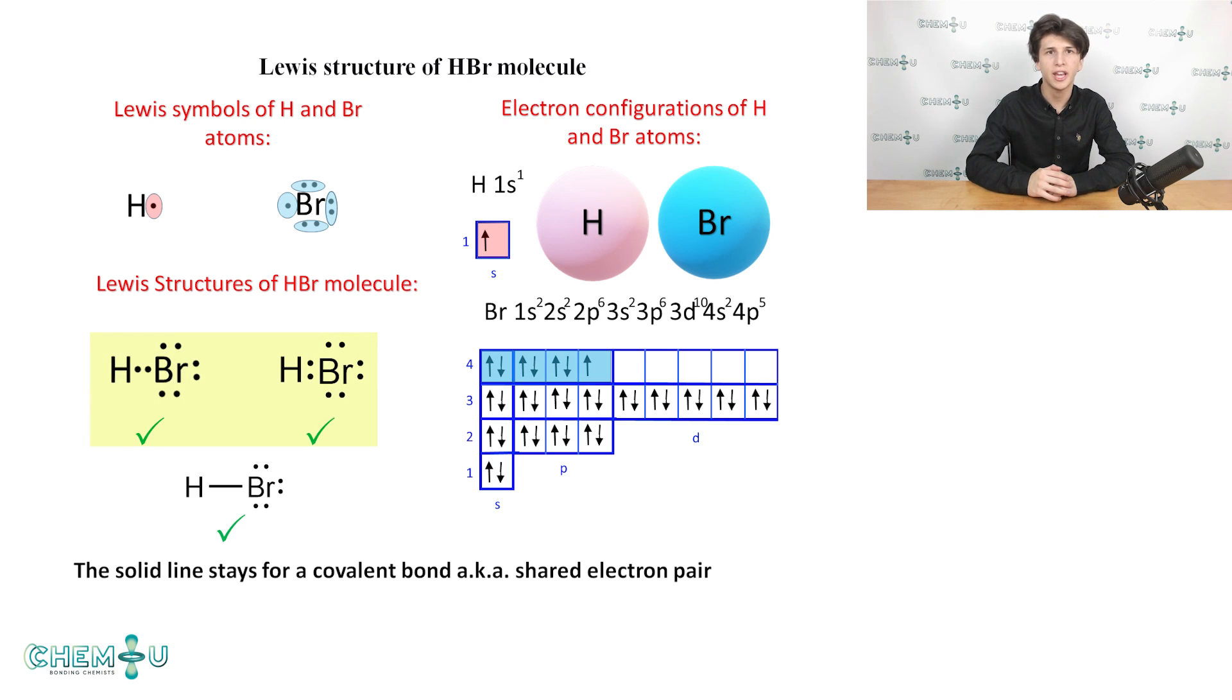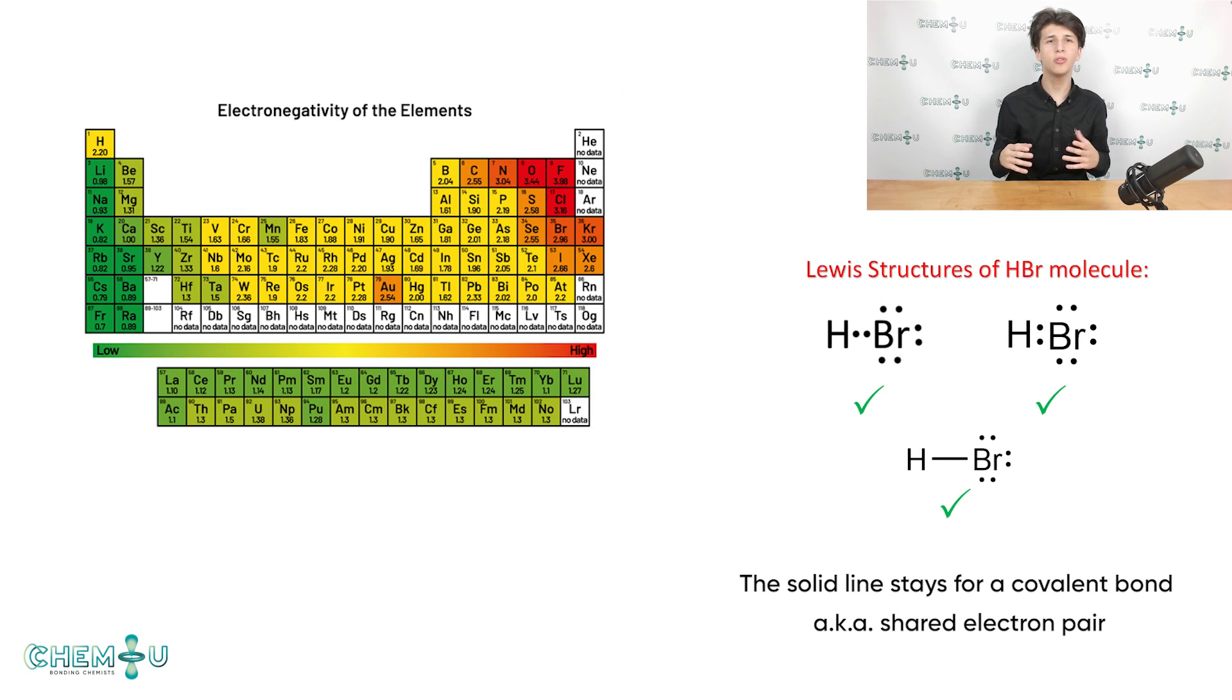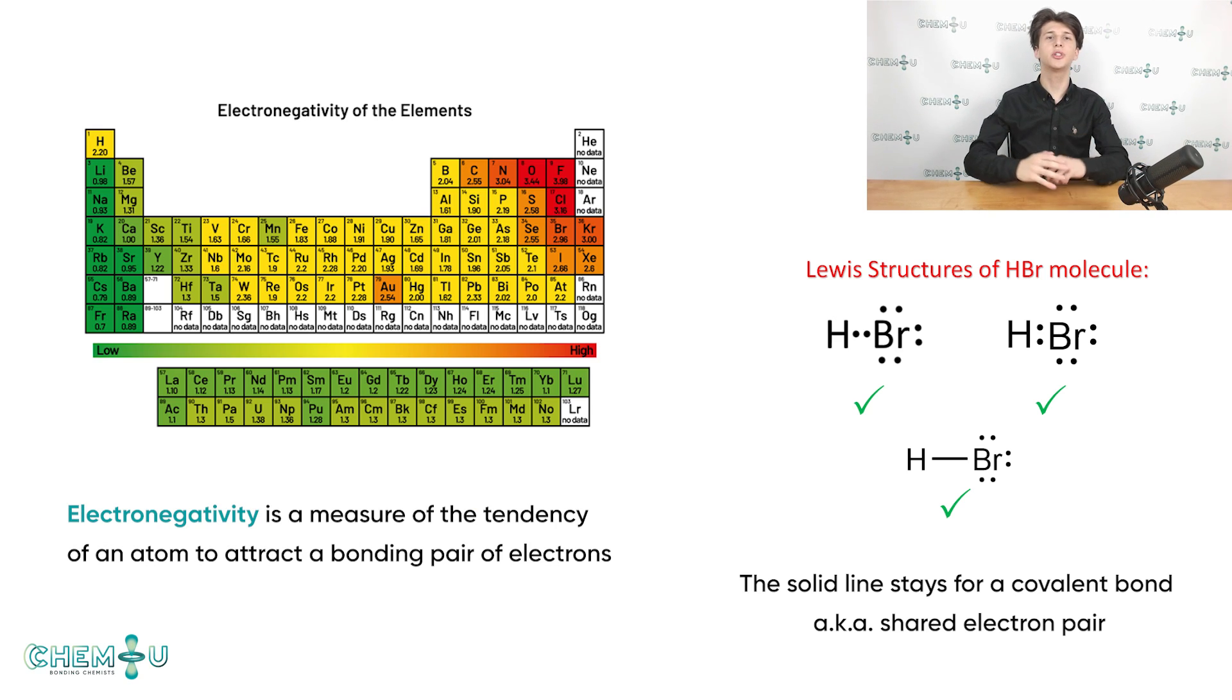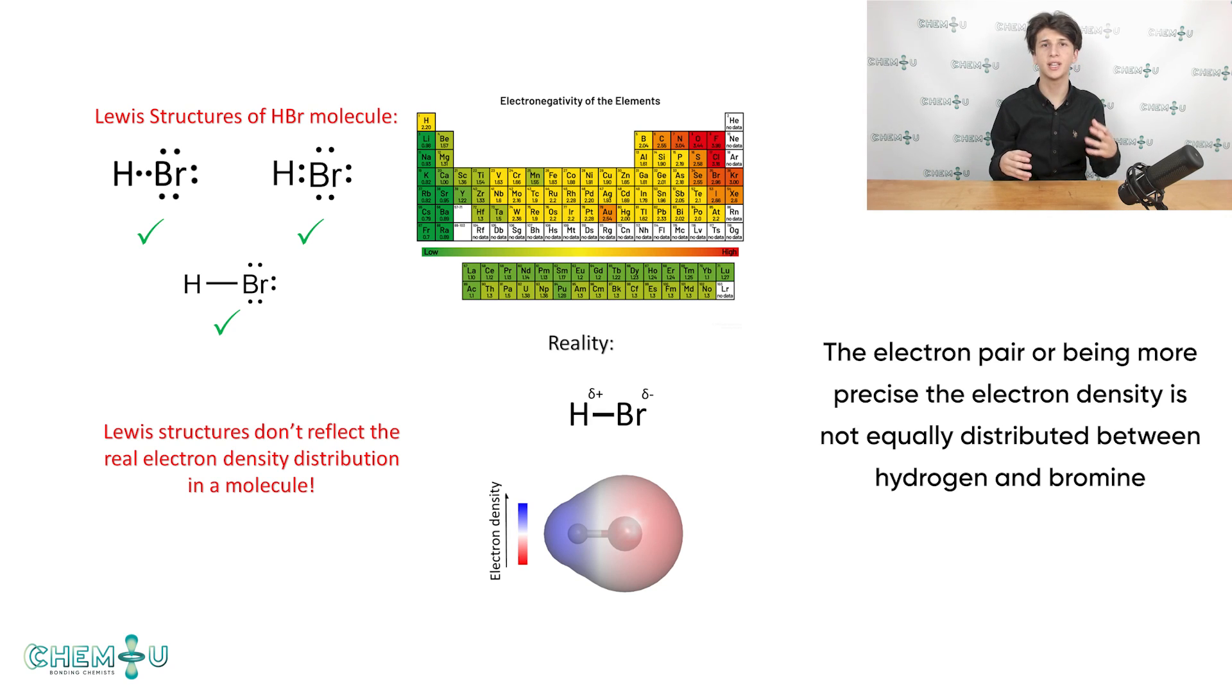Take a look at the Lewis structure of the HBr molecule that we discussed earlier today. I hope you remember from your high school chemistry classes that bromine is more electronegative than hydrogen. For those of you who don't remember, here is a brief recall. Electronegativity is a measure of the tendency of an atom to attract a bonding pair of electrons. There are several ways of calculating electronegativity and the most popular one is the Pauling scale presented on the slide. The higher number is, the stronger an atom pulls the shared electron pair. It is obvious that bromine pulls the electrons to itself much stronger than hydrogen due to higher electronegativity. It means that the electron pair, or being more precise the electron density, is not equally distributed between hydrogen and bromine. It is concentrated more on the bromine atom.